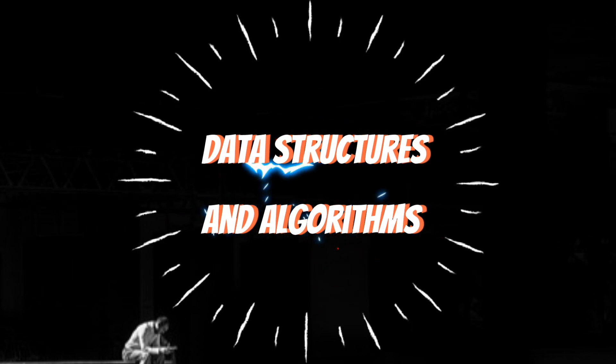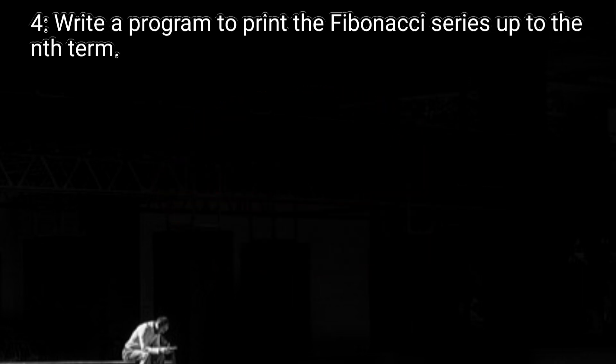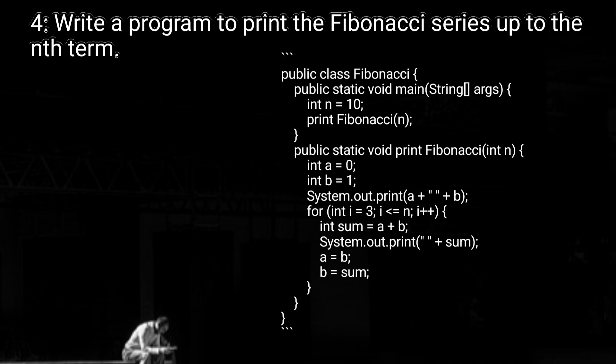Data structures and algorithms: write a program to print the Fibonacci series up to the nth term. See the code on the screen. Declare variables to store the first two Fibonacci numbers, initialize a variable to store the nth term, loop through the numbers from 3 to nth term, calculate the next Fibonacci number as the sum of the previous two, then print the Fibonacci series.